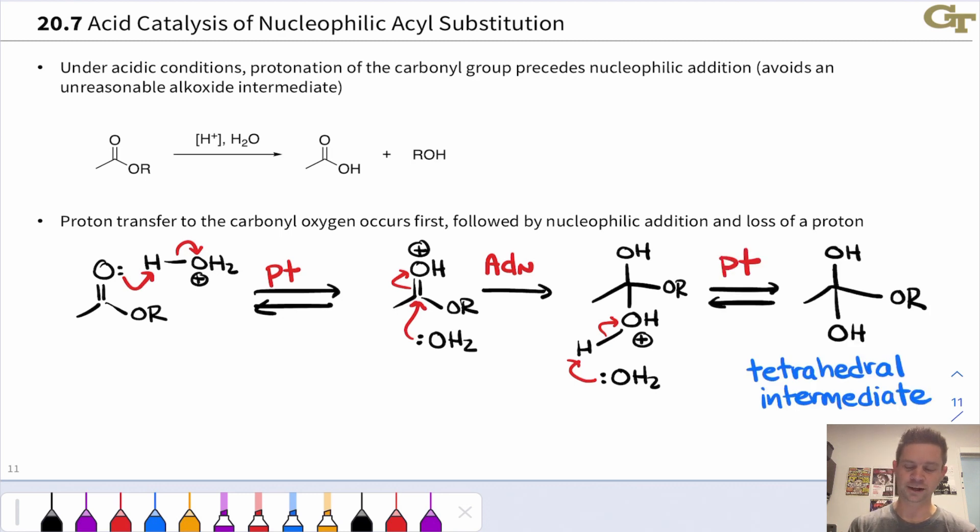This particular tetrahedral intermediate has two OH groups linked to the former carbonyl carbon, one derived from the carbonyl oxygen and the other derived from water. In the next stage of the mechanism,